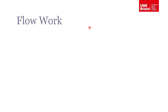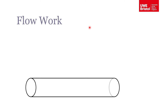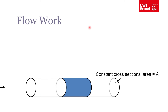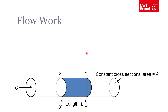Before we can talk about the steady flow energy equation, you first need to understand the concept of flow work. So if we consider this pipe with a cross-sectional area A, and there's fluid moving through this pipe at velocity C, to move that fluid down the pipe along a certain length, we need a certain pressure to push it down the pipe.